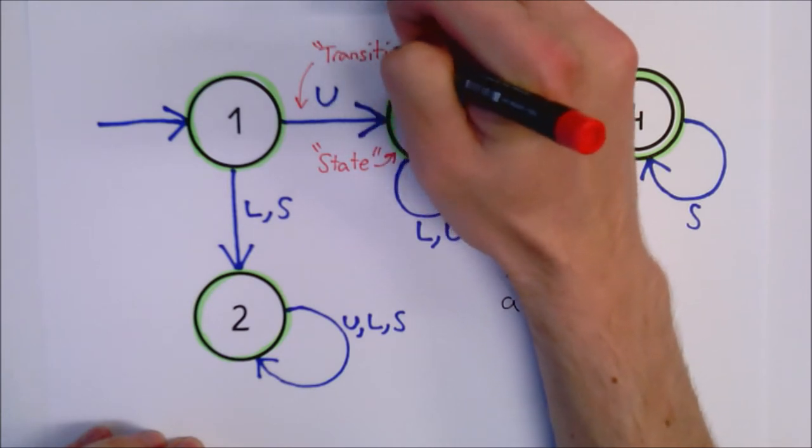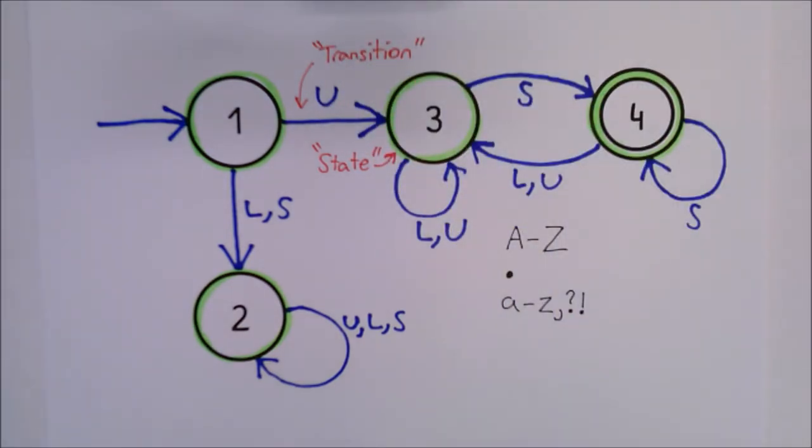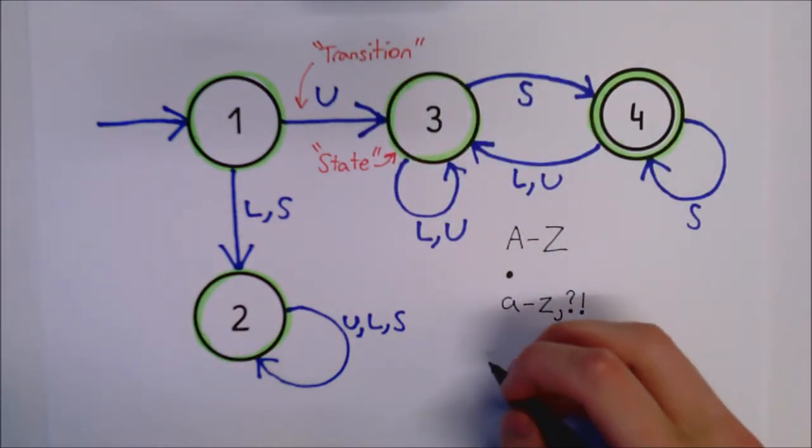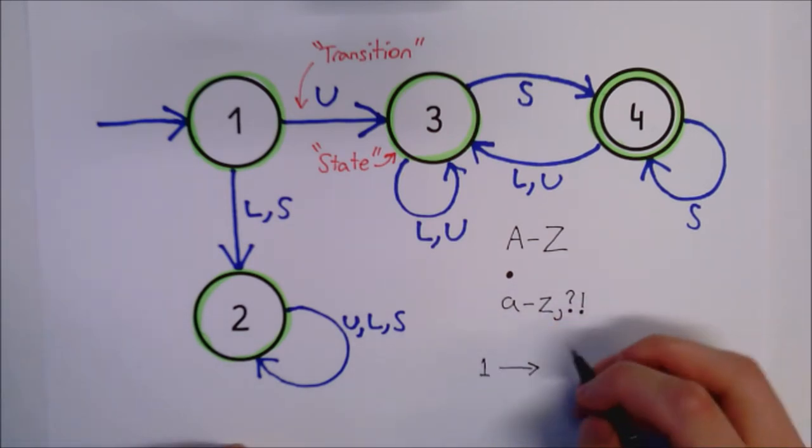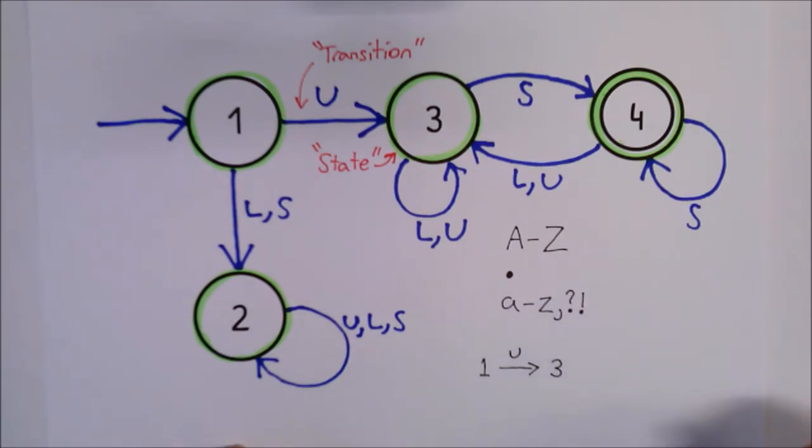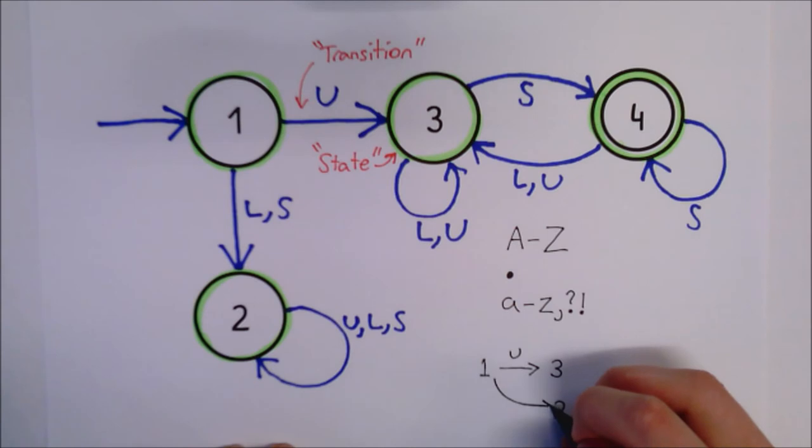These represent transitions from one state to the next. For example, if we are at state 1, then the U arrow will transition us or move us to state 3, while the Ls arrow would transition us to state 2. Here, Ls just means that both L and S result in the same transition.